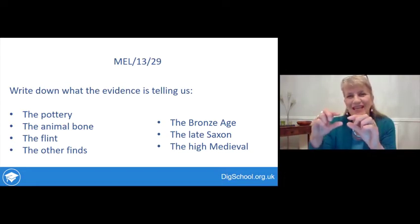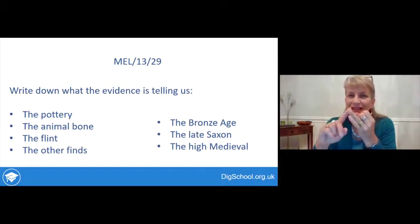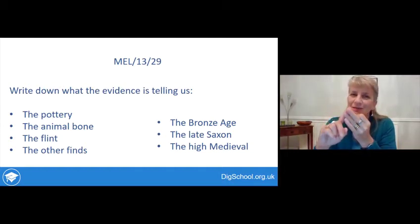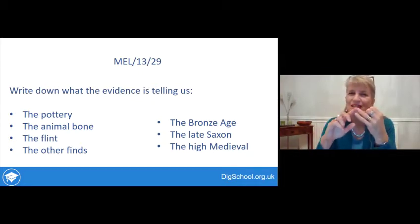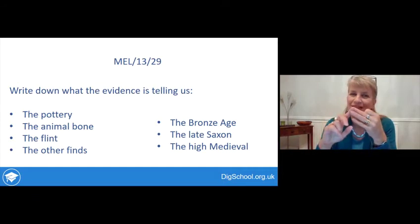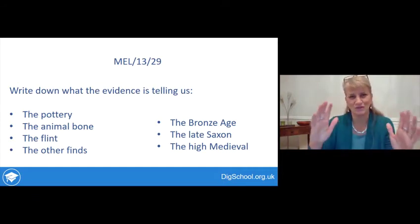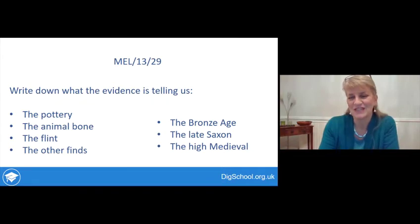We'll look at three key periods: the Bronze Age, the Late Saxon period, and the High Medieval. There are four categories of evidence: the pottery, the animal bone, the flint, and the other finds. In your workbook you've got a grid and you can write all of these notes down.